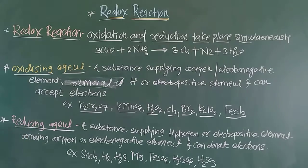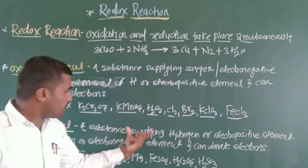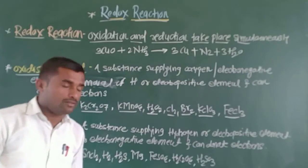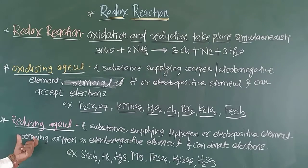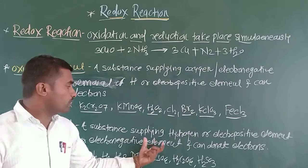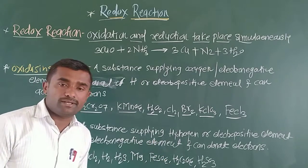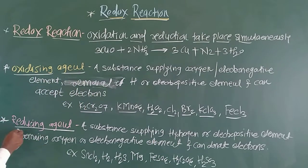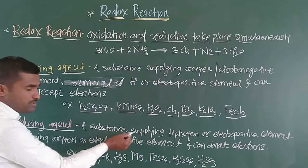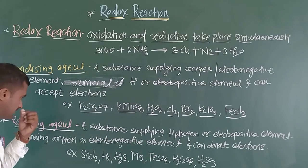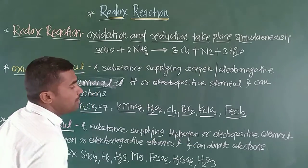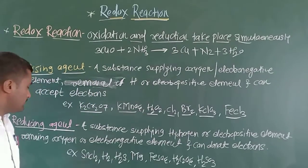Next, what is a reducing agent? A reducing agent is a substance that supplies hydrogen or an electropositive element. It may supply hydrogen or it may supply an electropositive element.